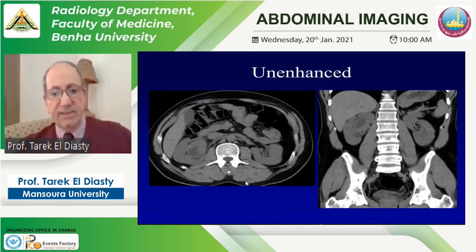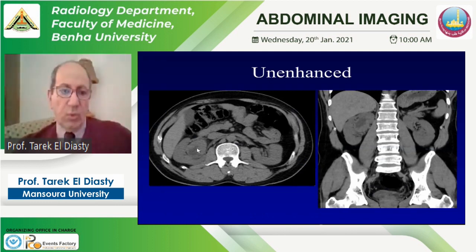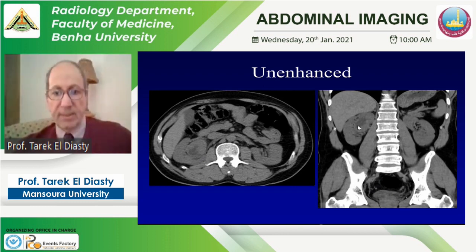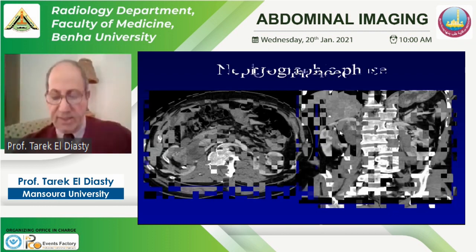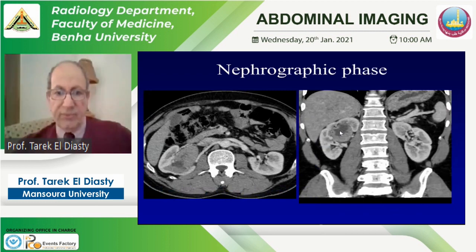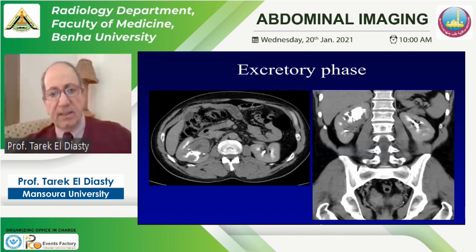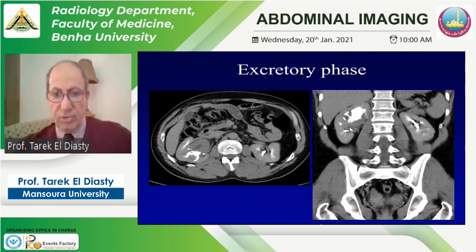An example of CT urography in a patient with hematuria: on enhanced CT, an irregular soft tissue lesion in the region of the renal pelvis shows enhancement with areas suggesting cystic degeneration. In the nephrographic phase, and at the delayed phase, there is erosion and irregularity of the related pelvis and upper caliceal infundibulum — a case of a renal pelvic transitional cell carcinoma demonstrated across typical CT urography phases.